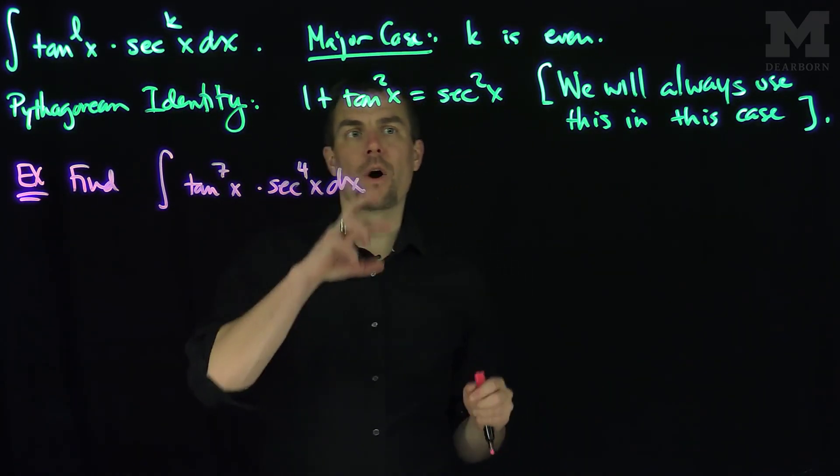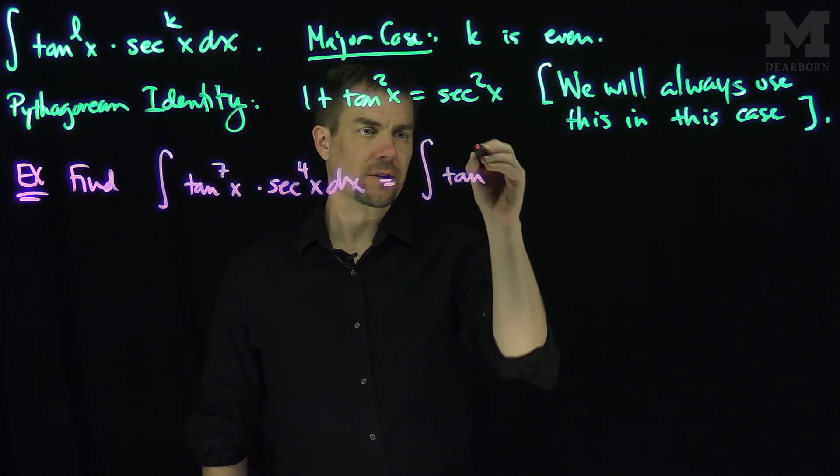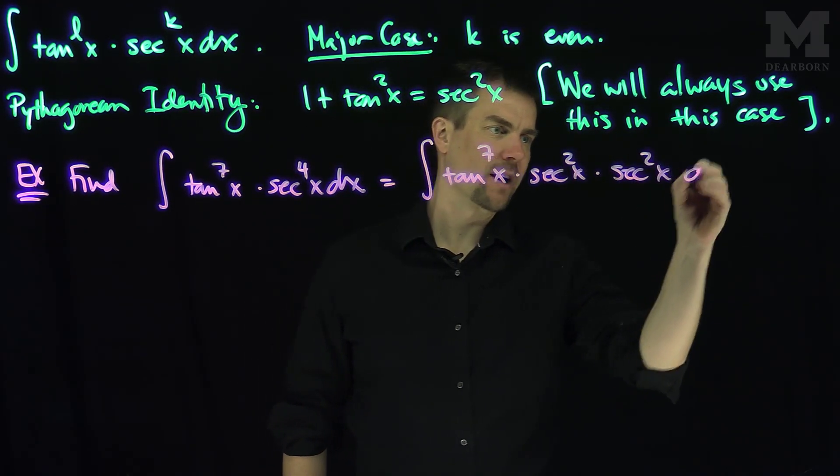Now, I need to keep one factor of secant squared. So what I'm going to do is write this as the integral of tangent to the seventh of x times secant squared of x times secant squared of x dx.